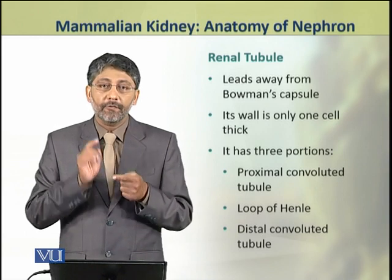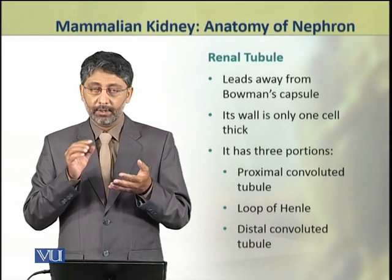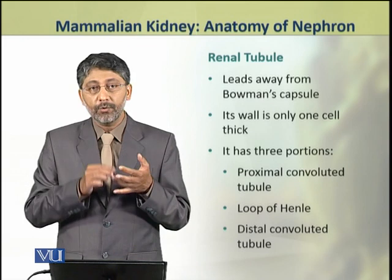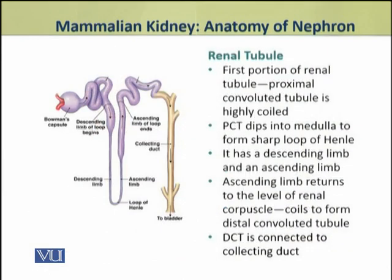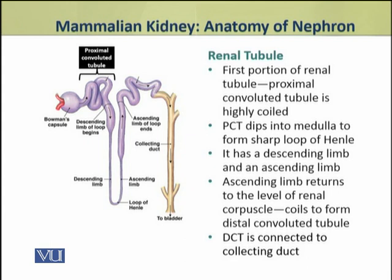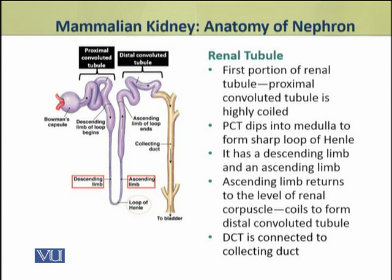Its wall is only one cell thick. It has three portions: the proximal convoluted tubule, the loop of Henle, and the distal convoluted tubule. The proximal convoluted tubule is highly coiled. It dips into the medulla and forms a sharp loop of Henle. The loop of Henle has a descending limb and an ascending limb. The ascending limb returns to the level of the renal corpuscle and coils to form the distal convoluted tubule, which is connected to a collecting duct.